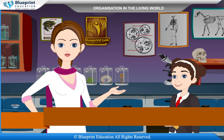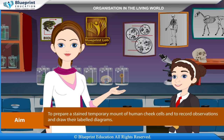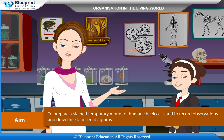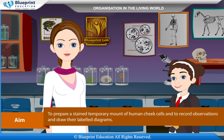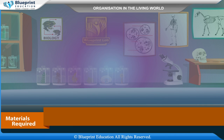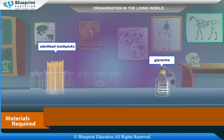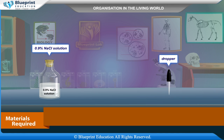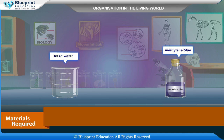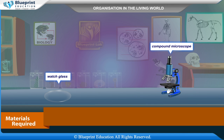Temporary mount of human cheek cells: The aim is to prepare a stained temporary mount of human cheek cells and to record observations and draw labeled diagrams. Materials required are: slide, cover slip, needle, blotting paper, sterilized toothpicks, glycerine, 0.9% NaCl solution, dropper, fresh water, methylene blue, watch glass, and compound microscope.